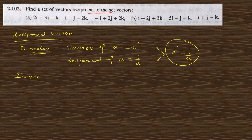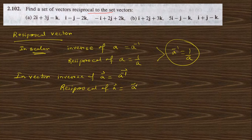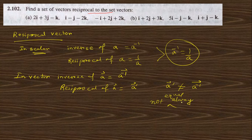But in the case of vector quantity, the inverse of vector A is A inverse vector, but the reciprocal of vector A is A prime vector. This A prime vector is not equal to A inverse in general — they can be equal in some special cases, but in general they are not equal.